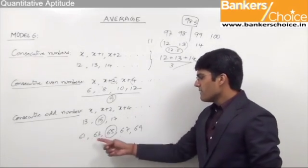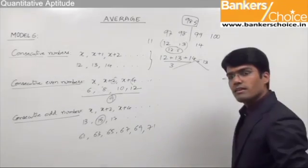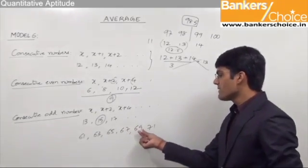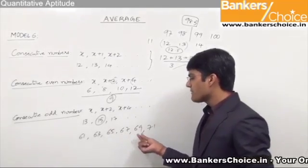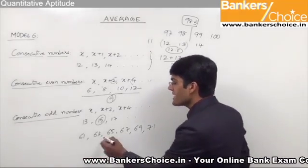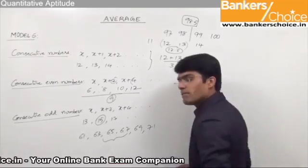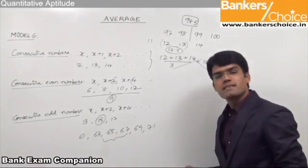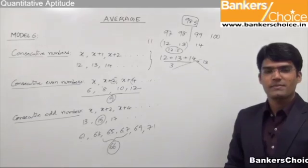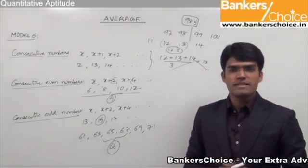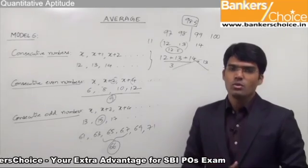For example, let us say we add another number 71 to the previous set. Now 61, 63, 65, 67, 69 and 71 form a series of six consecutive odd numbers. Here to find the average we do not have one particular middle number, so the average should be taken as the number which comes exactly between the two middle numbers. The number which comes between 65 and 67 is 66, so the average of these consecutive odd numbers is 66. For any consecutive numbers, average is the middle number; if no single middle number, take the average of the two middle numbers.